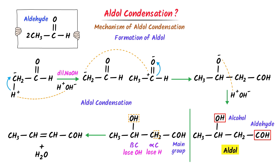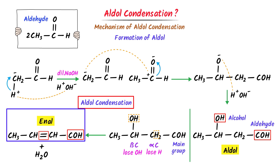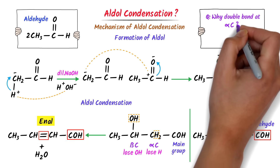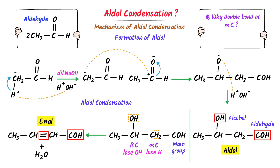A double bond is formed between them. This molecule contains a double bond — we write 'en'. Secondly, it contains an aldehyde group — I write 'al'. Hence, we get enal. Remember this important MCQ: after aldol condensation, we get an α,β-unsaturated aldehyde, or enal. Why is the double bond formed at alpha carbon? It is because the double bond is more stable at the alpha carbon — hence it is therefore formed at alpha carbon.